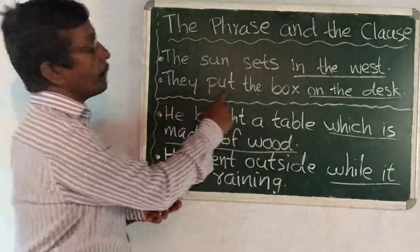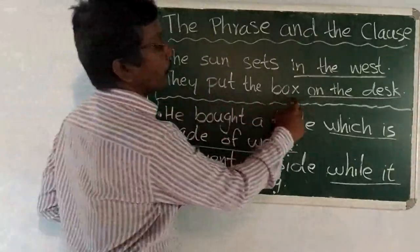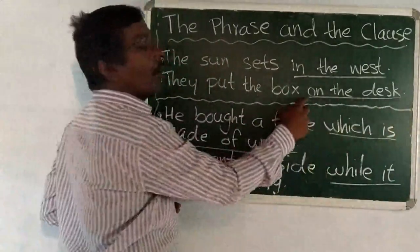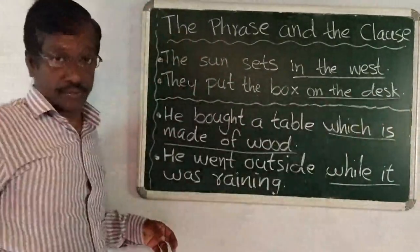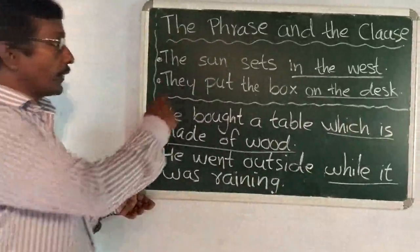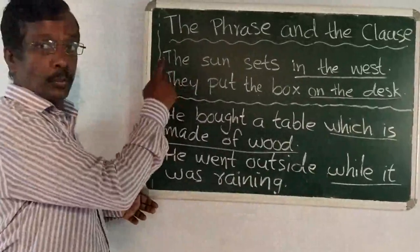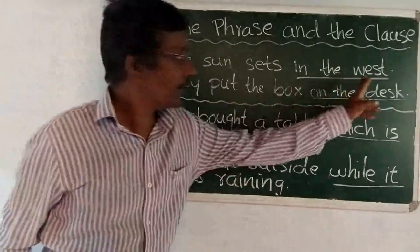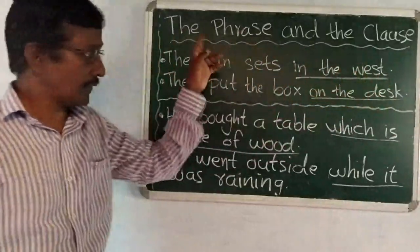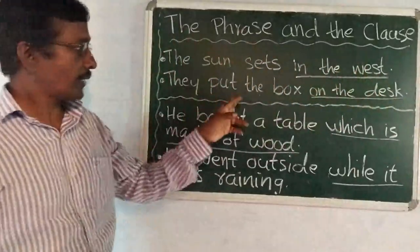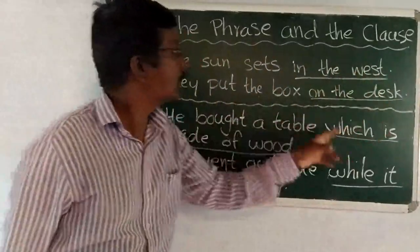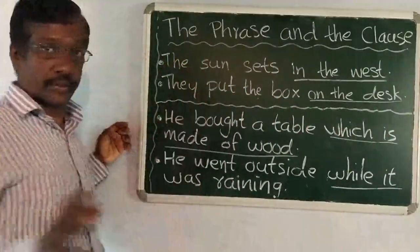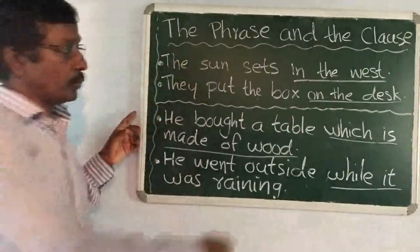In the second sentence: 'They put the box on the desk.' In this sentence, 'on the desk' is the phrase. So, in the first sentence 'in the west' is a phrase, and in the second sentence 'on the desk' is a phrase.